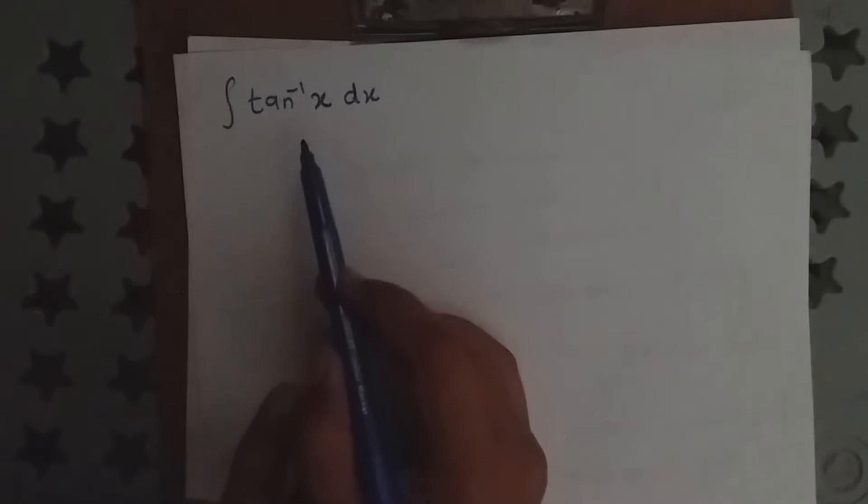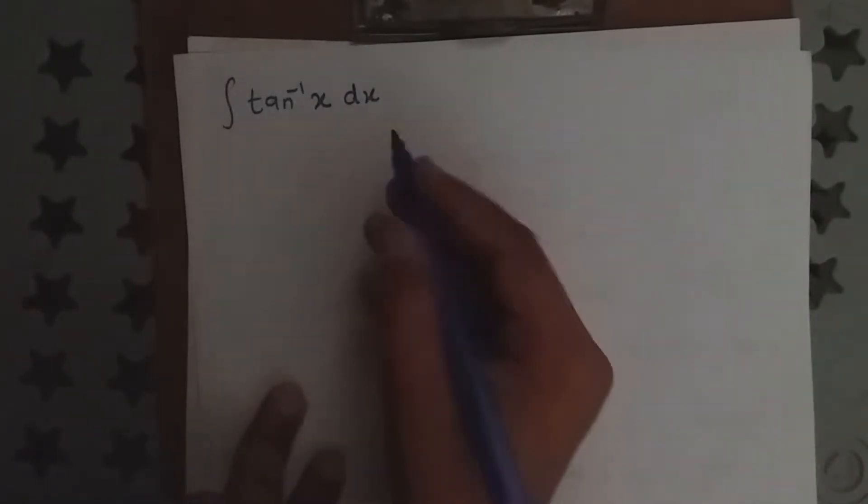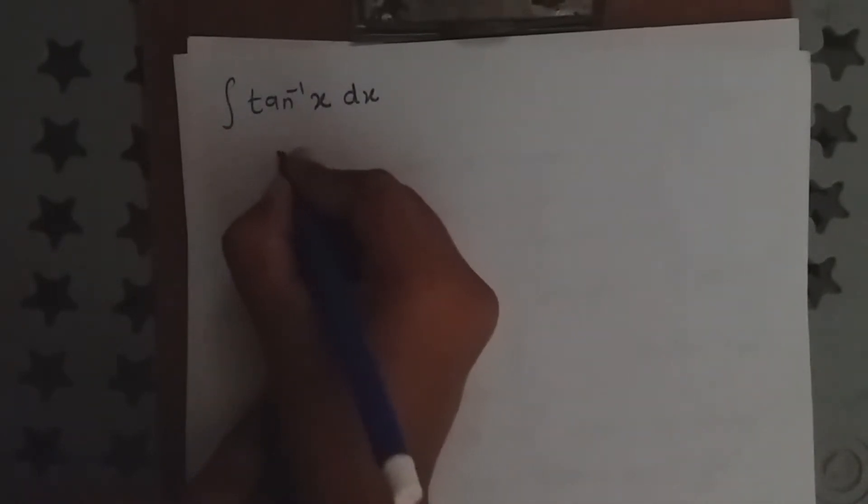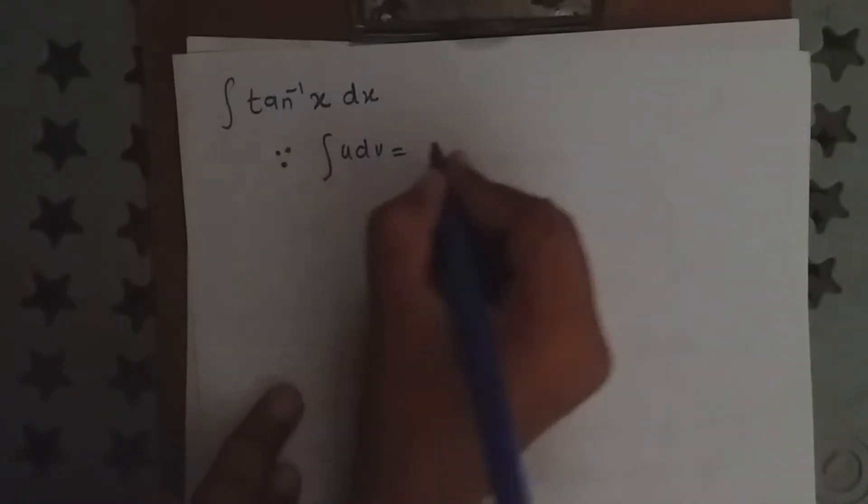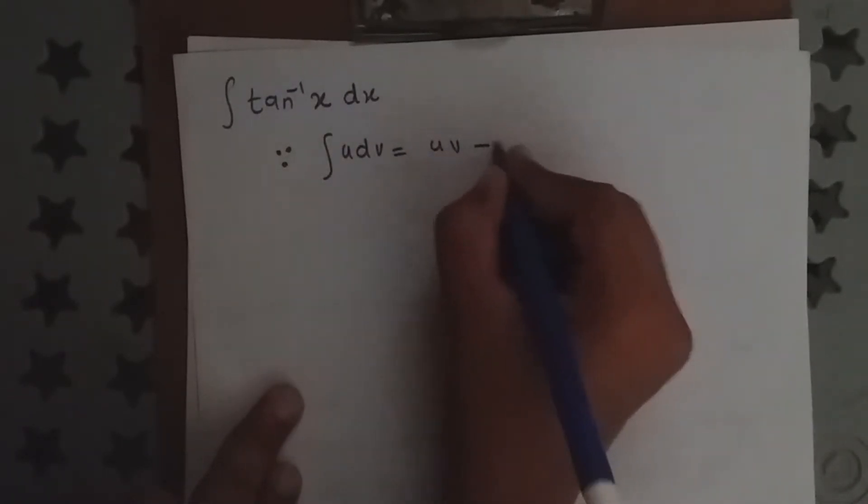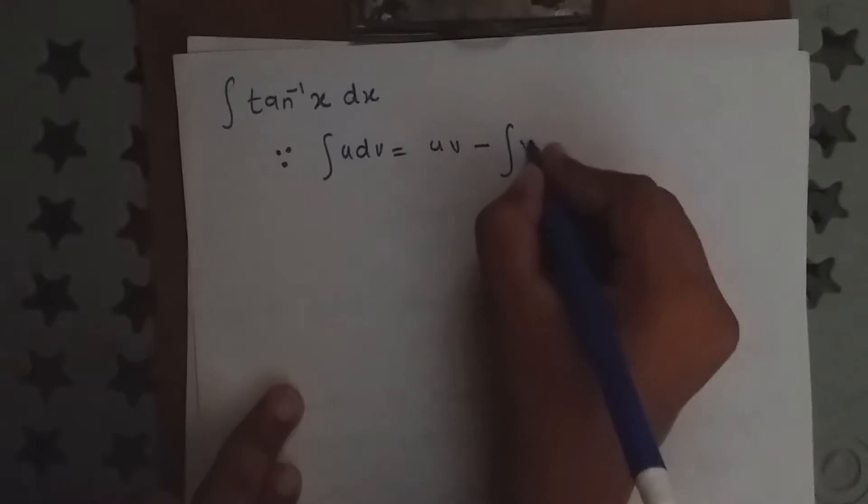We find the integration of tan inverse x by parts. The formula for integration by parts is: integration of u dv equals uv minus integration of v du.